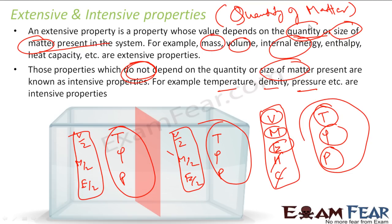So if some property depends on quantity of matter, that is an extensive property. If you increase the quantity, the volume increases, the mass increases, the energy increases. These are extensive properties. Properties which don't depend upon the quantity of matter are intensive properties.